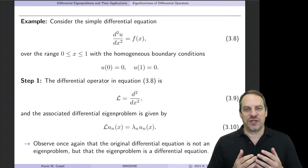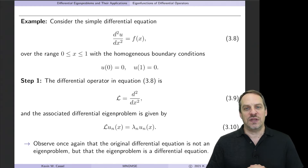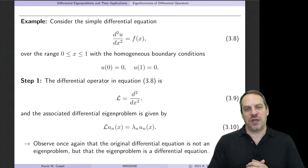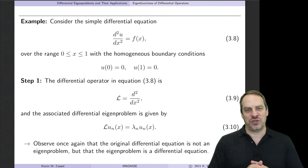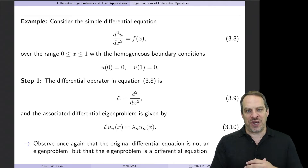In the last video, we discussed how we can use our four-step procedure for solving a differential equation using the eigenfunctions of its differential operator. This is analogous to the procedure we had in Chapter 2 for solving a system of linear algebraic equations with a symmetric coefficient matrix. Here, the differential operator needs to be self-adjoint, which we'll talk about in a later video.